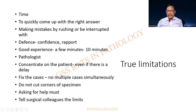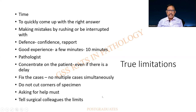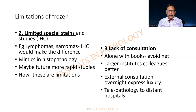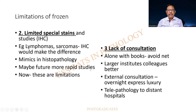Whenever there are multiple cases, it is your role to fix the order. Cutting the corners of the specimen is not advised. Ask for help if needed, and tell your surgical colleagues the limitations. For example, ganglion cells in Hirschsprung's disease are not very easily assessed — these can be some limitations in a frozen section. Limiting special stains: you cannot do IHC in a frozen section, and diagnoses such as lymphomas, sarcomas, etc., cannot be made in a cryostat. There are many mimics in histopathology and giving a diagnosis can sometimes lead to errors. Maybe the future can have more rapid remedies, but right now these are some of the limitations.